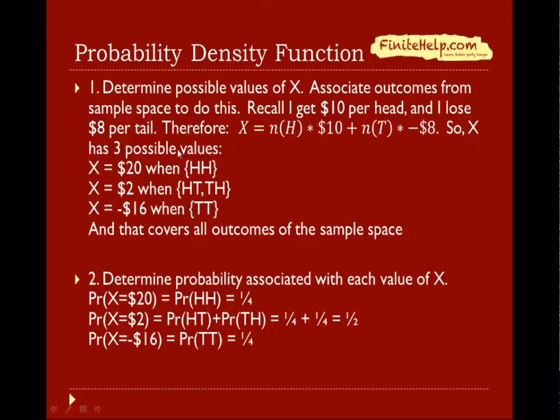So X has three possible values: X = $20 when {HH}, X = $2 when {HT,TH}, and X = -$16 when {TT}. This covers all outcomes from the sample space.